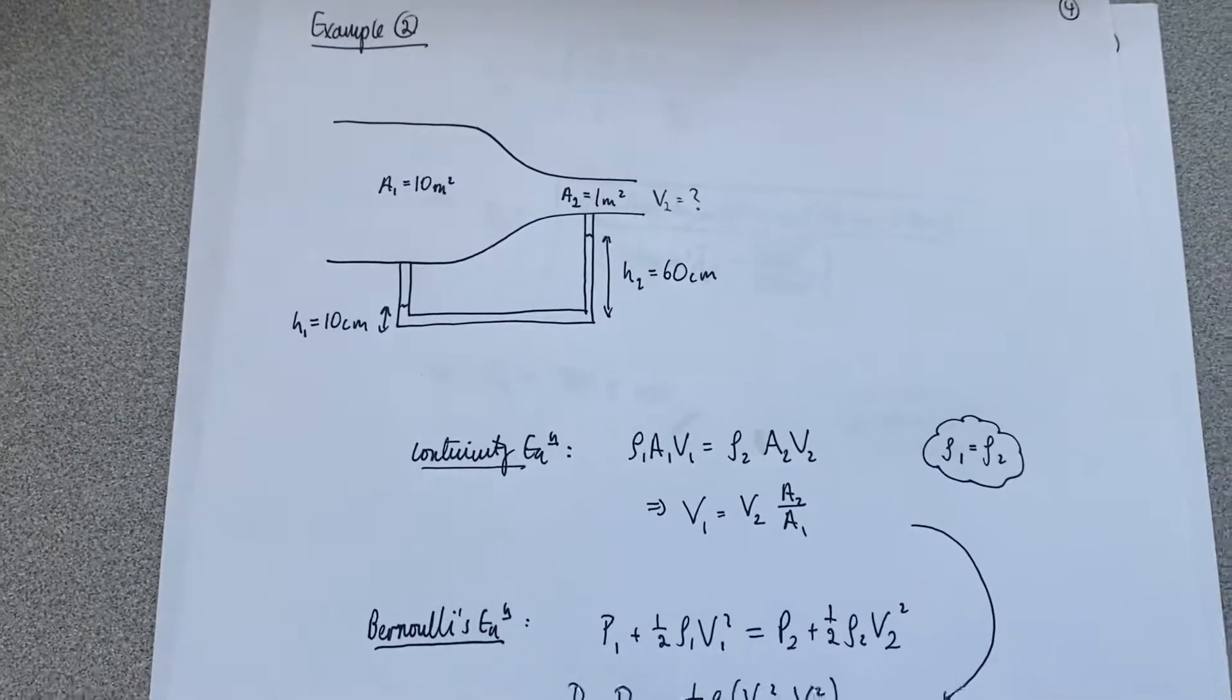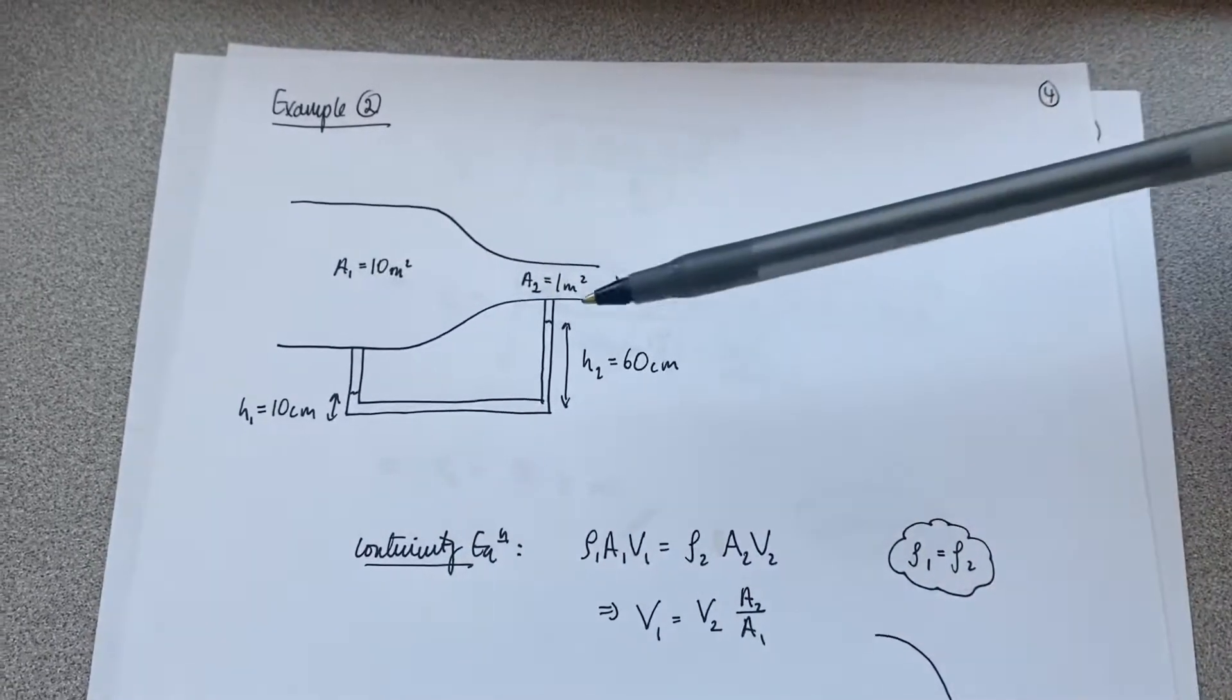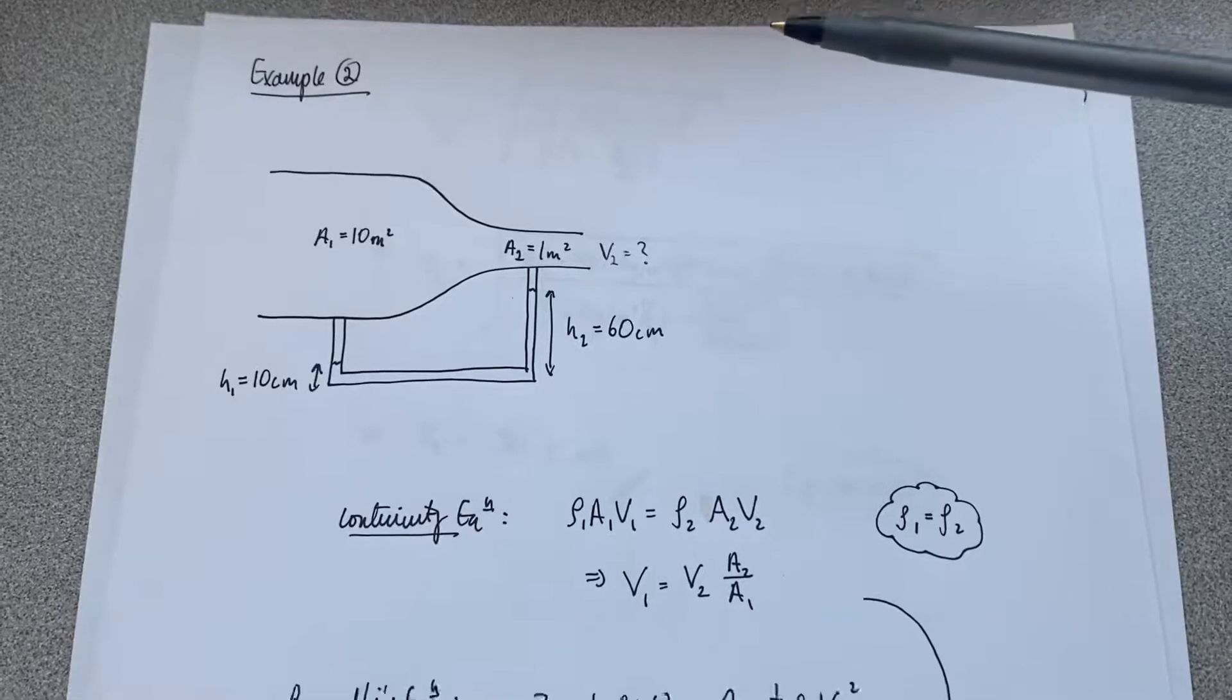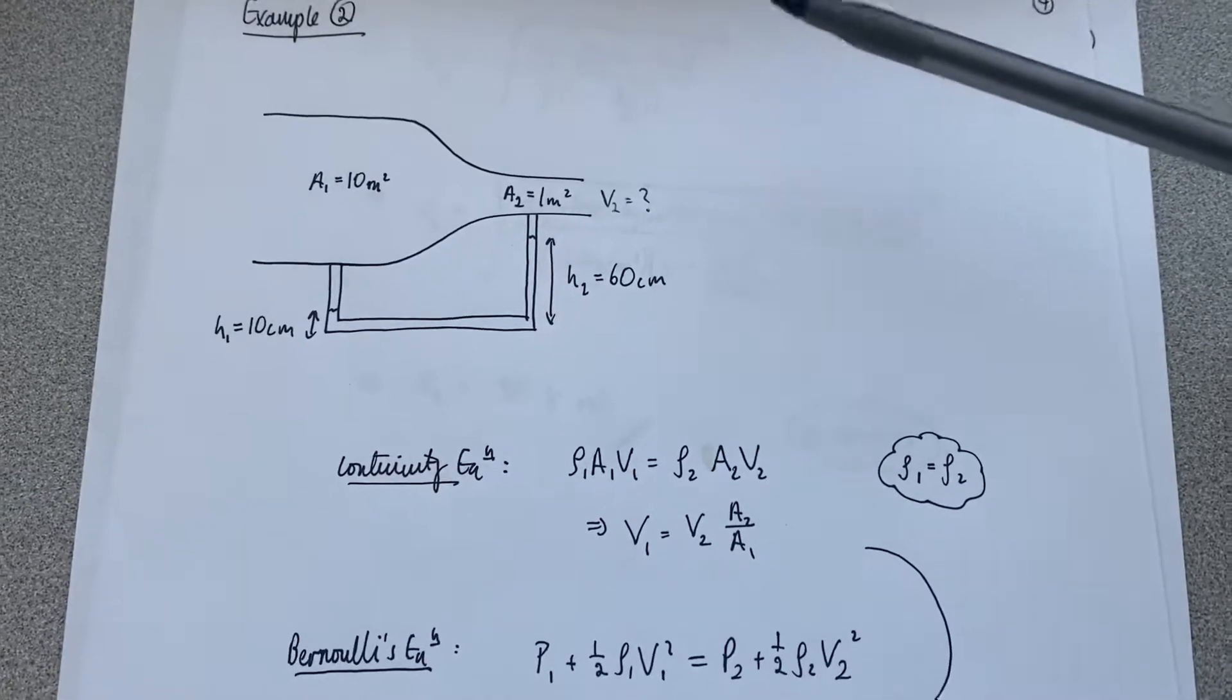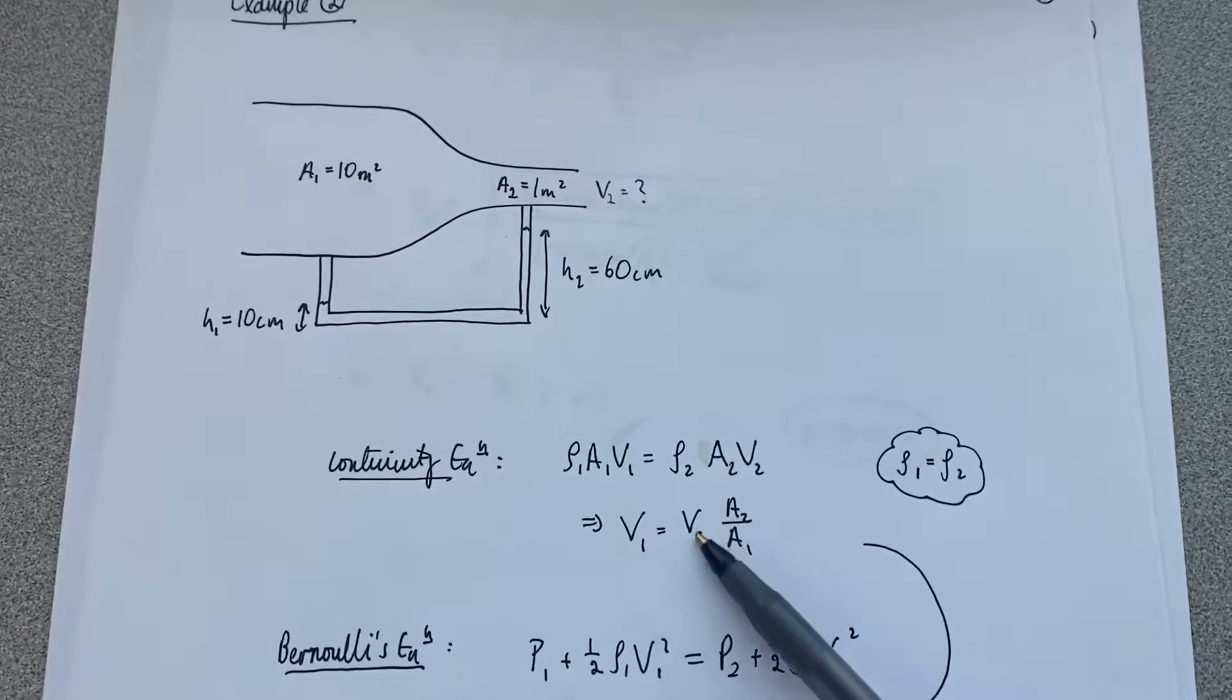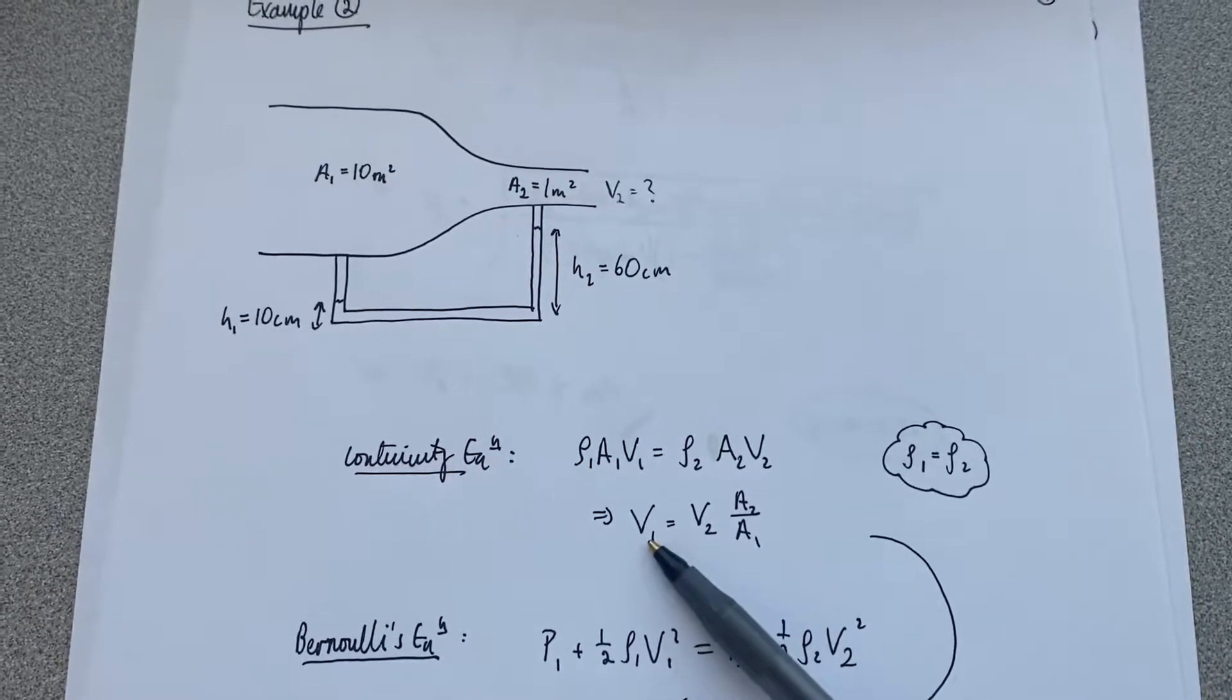So this time, because I don't know the two flow velocities, in fact I don't know either of them, I need to rearrange my equation slightly differently. So this time I start with the continuity equation so that I can write v1 in terms of v2.